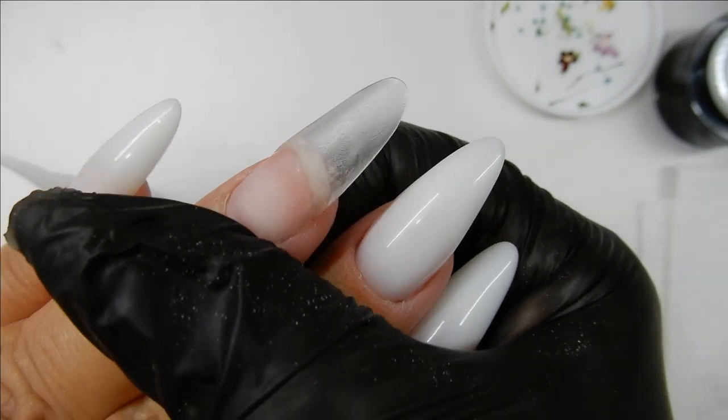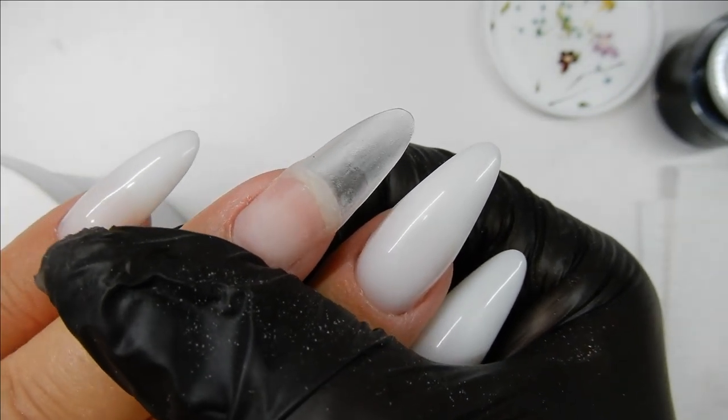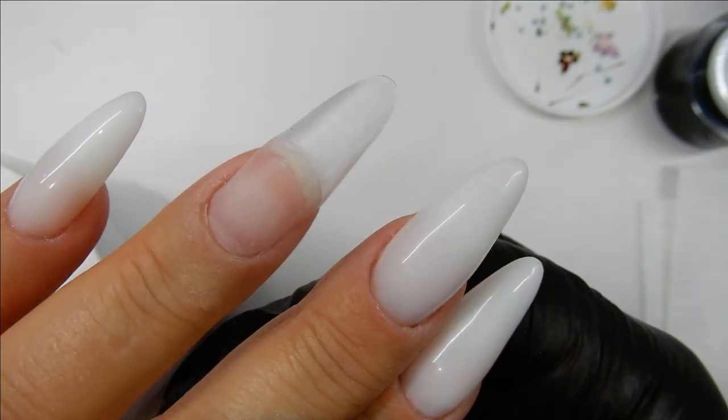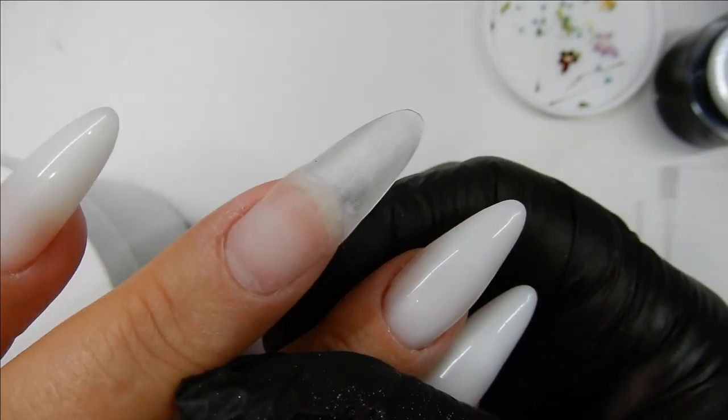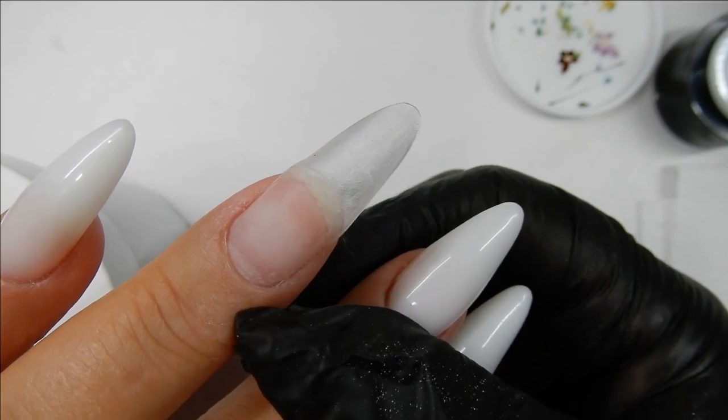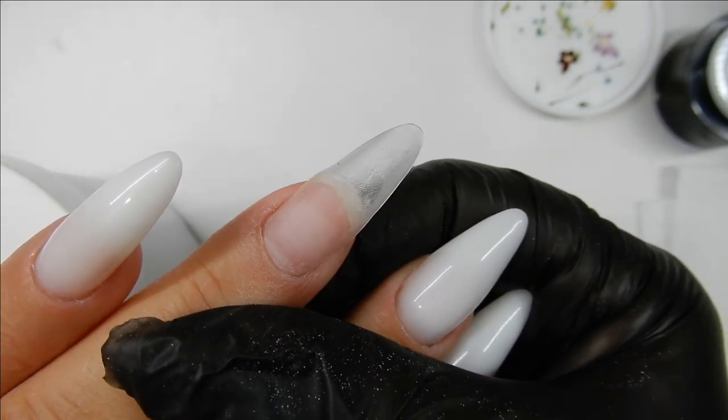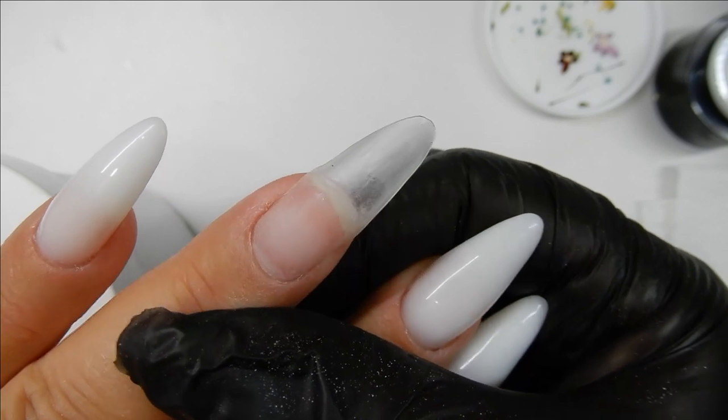And I'm finished and that's what it looks like now. I can apply builder gel over top of this. I just wanted to show you how you can take a tip and apply acrylic to it and pinch it into shape and give it a nice tight C-curve. And that's it, thank you so much for watching, and I'll see you in the next one. Bye!